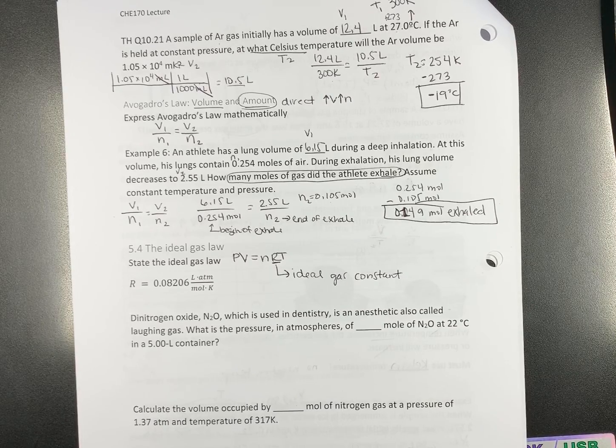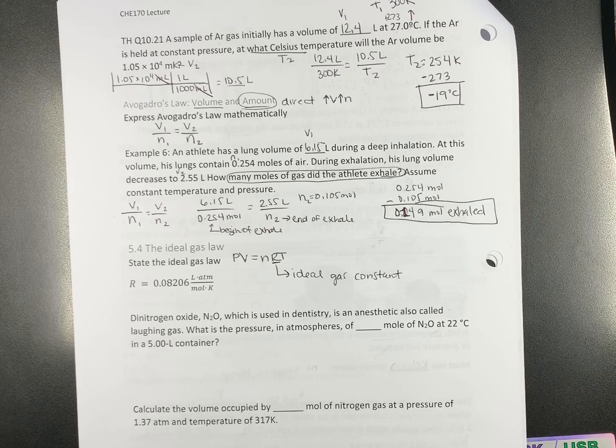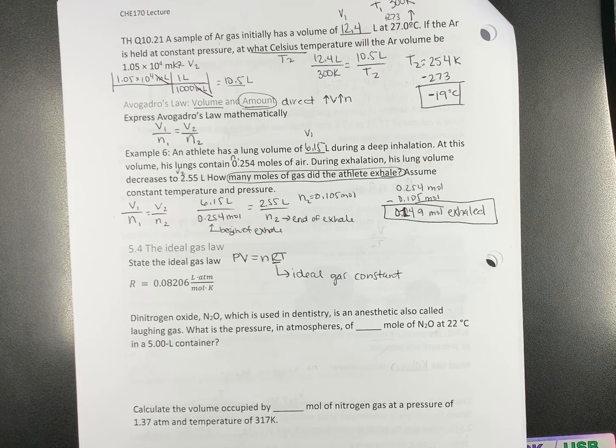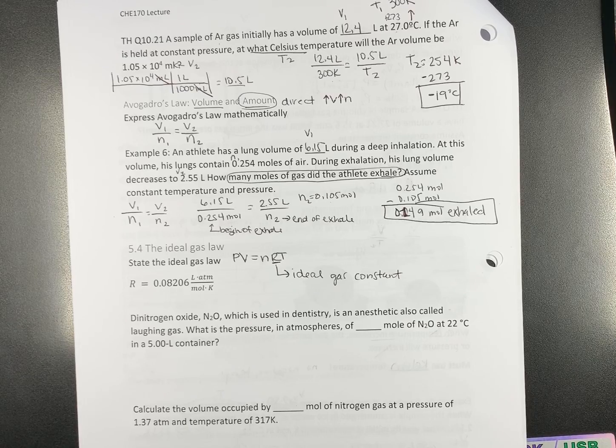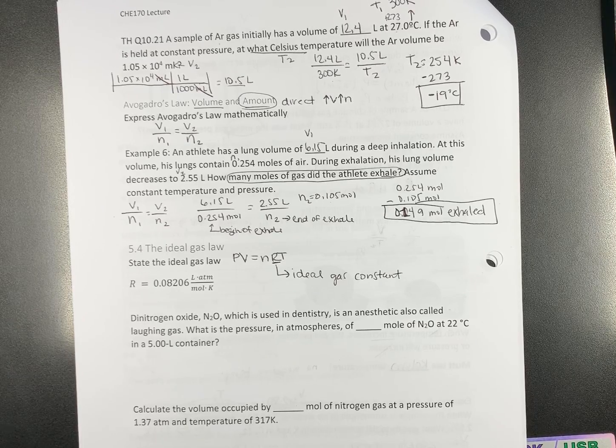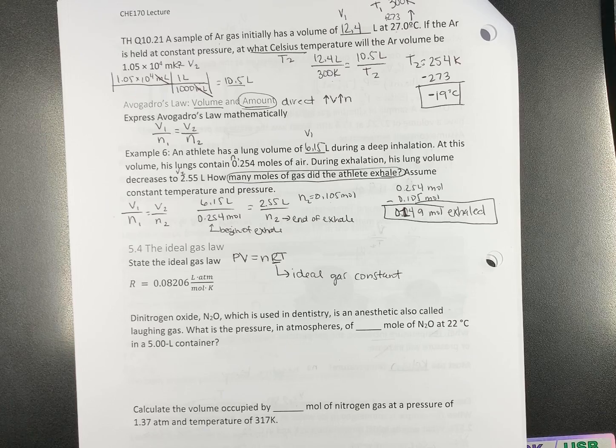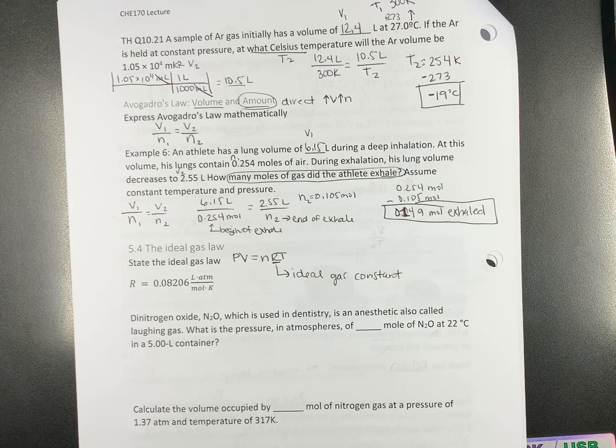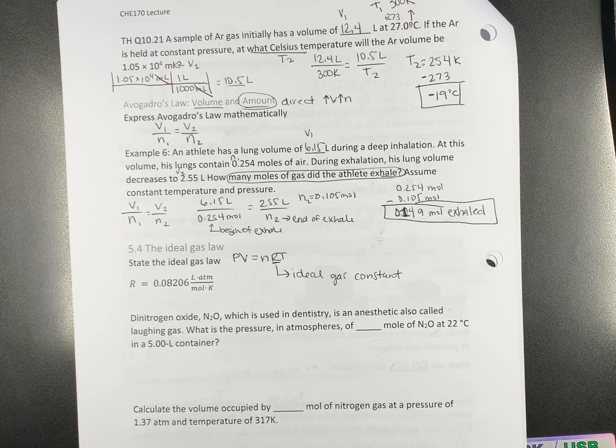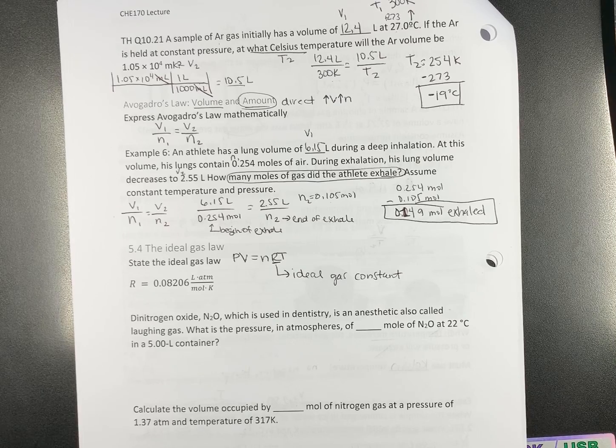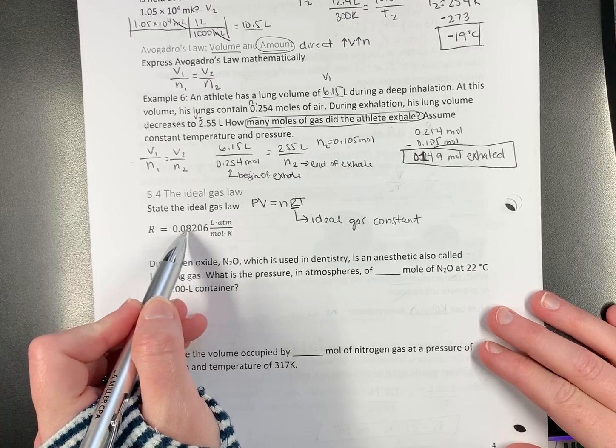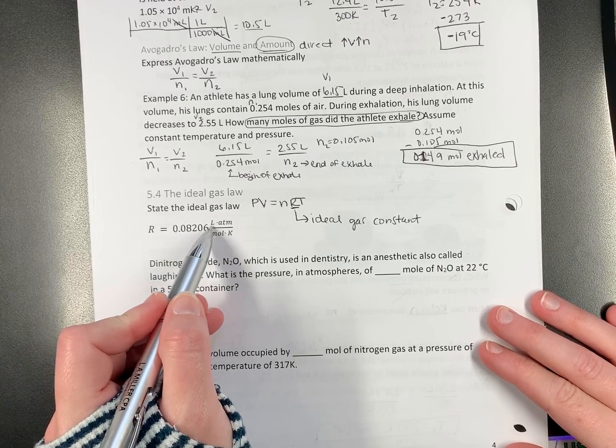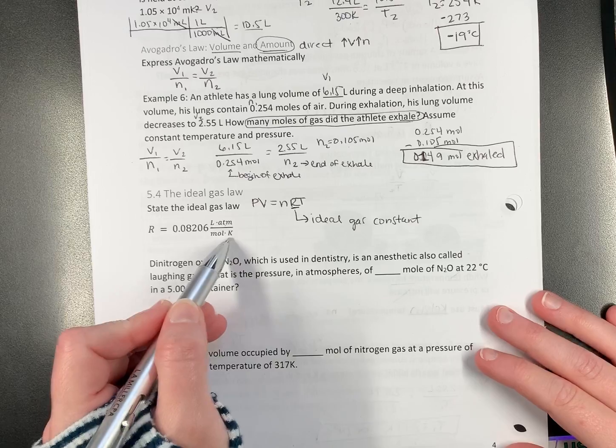There are actually two values for R. We'll deal with the second one later. But R is not a quantity that you need to memorize. It will always be given to you in a problem, on a test. At some point, you'll probably remember it because you'll get tired of writing it down. But R equals 0.08206 liter atmospheres per mole kelvin.